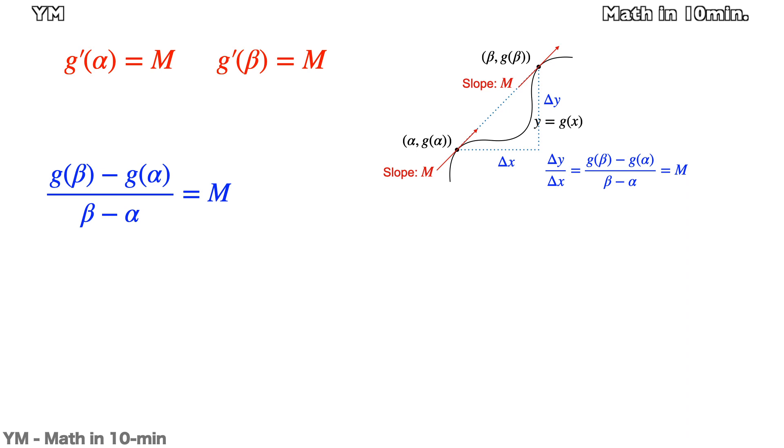That means there is a line tangent to g(x) at both (α, g(α)) and (β, g(β)). Then for this line, its slope is M and passes (α, g(α)). So the equation of this tangent line is y = M(x - α) + g(α).